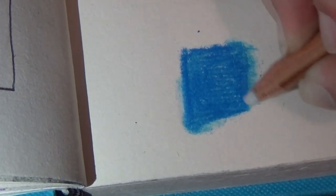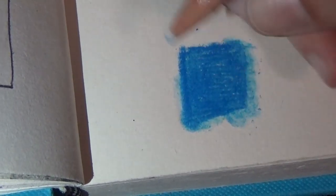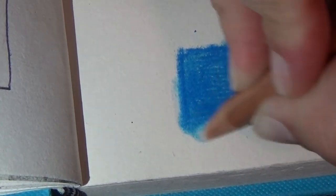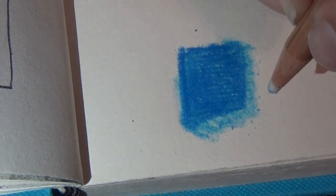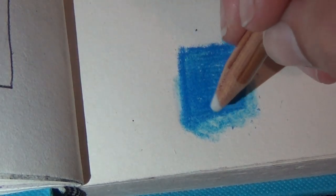I tend to color in circles, which helps with the picture looking not so streaky, strikey looking.